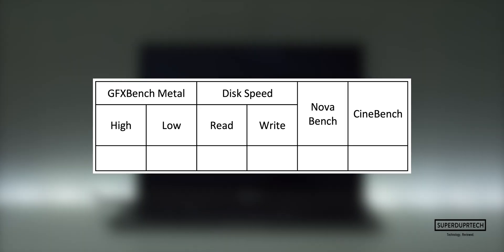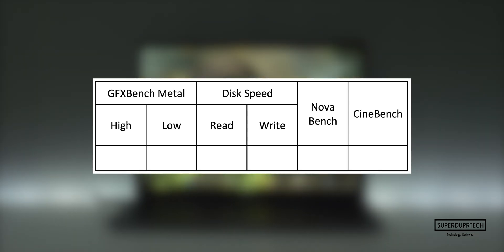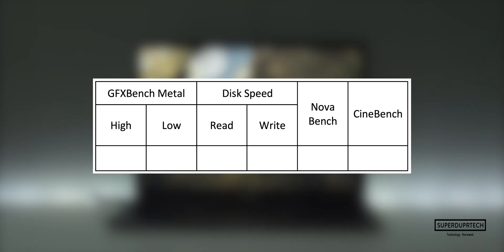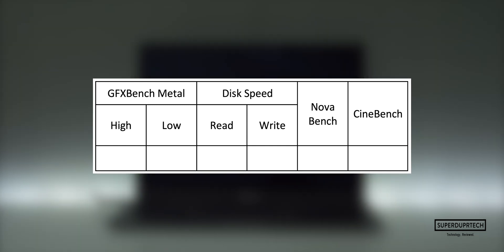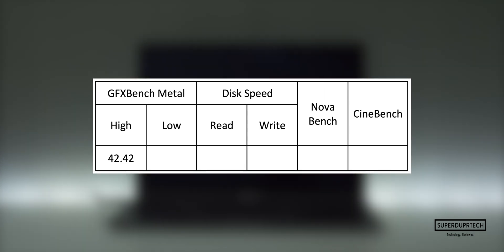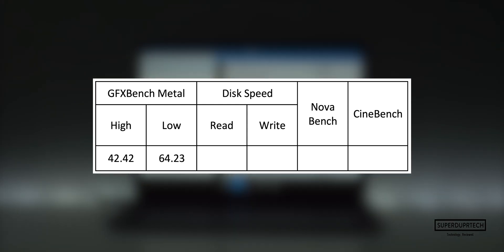The next test was from GFXBench, which runs a number of different tests varying from higher and lower levels of intensity. In the interest of saving time I've averaged these results, but I will show each individual result. The average for each higher intensive graphical task was around 42.42 frames per second, whereas with the lower intensive tasks I got a slightly higher frame rate of around 64.23 frames per second.